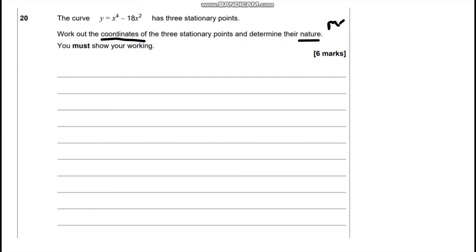Now when we're talking about nature we're talking about if those stationary points are maximums or minimums. The way we're going to do this to find the stationary points is find dy by dx, make it equal to zero, and solve for x.